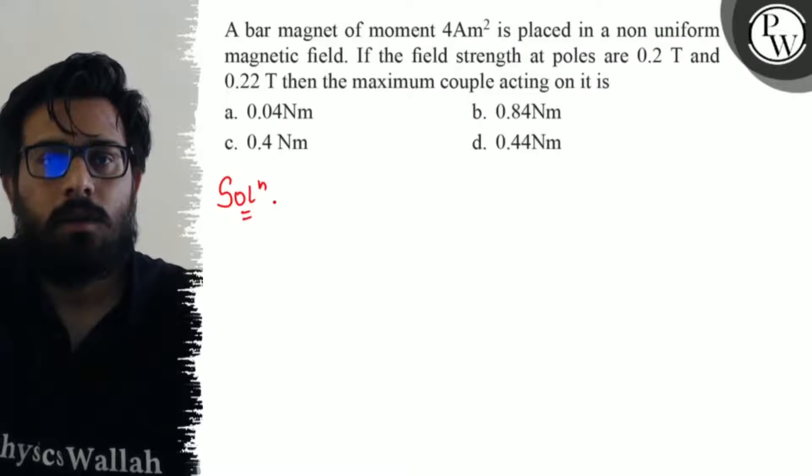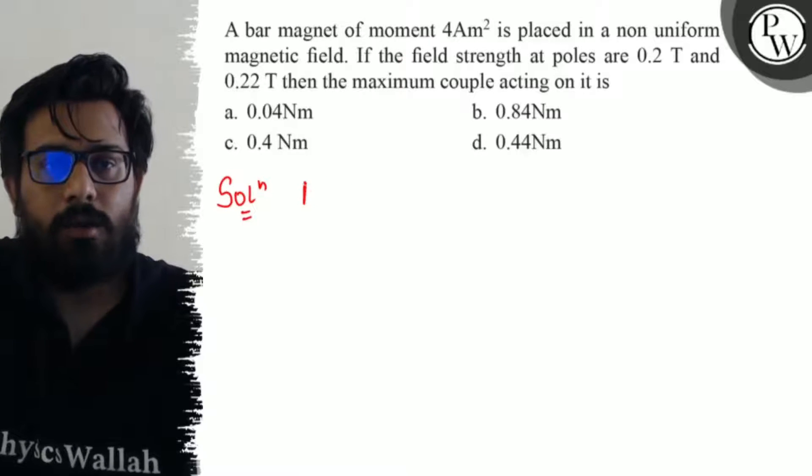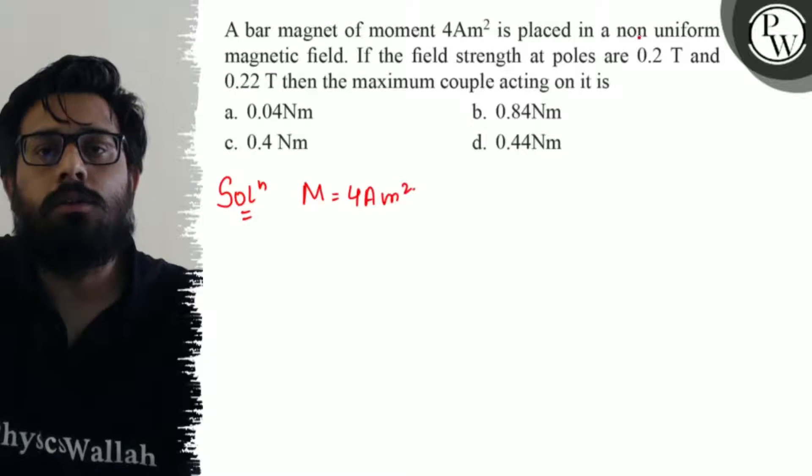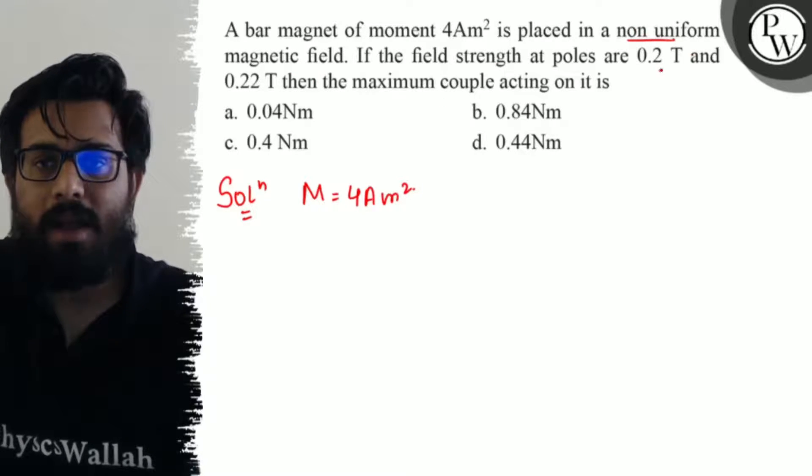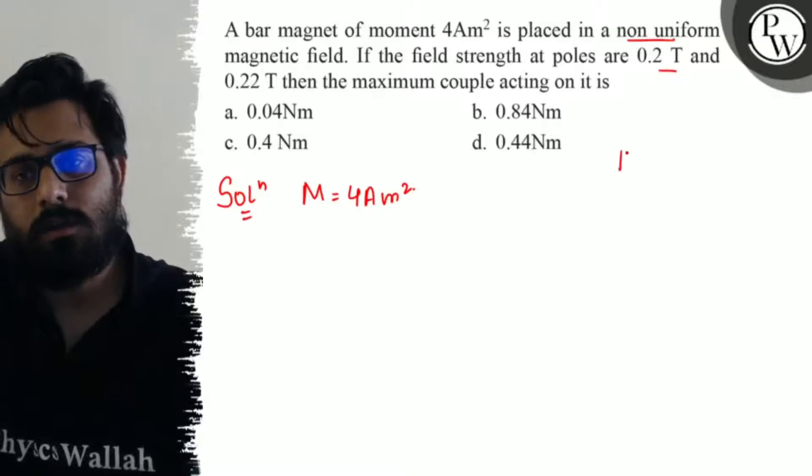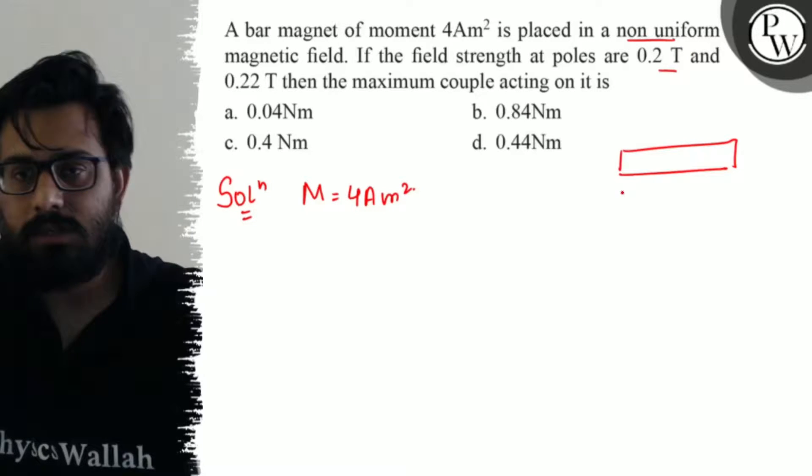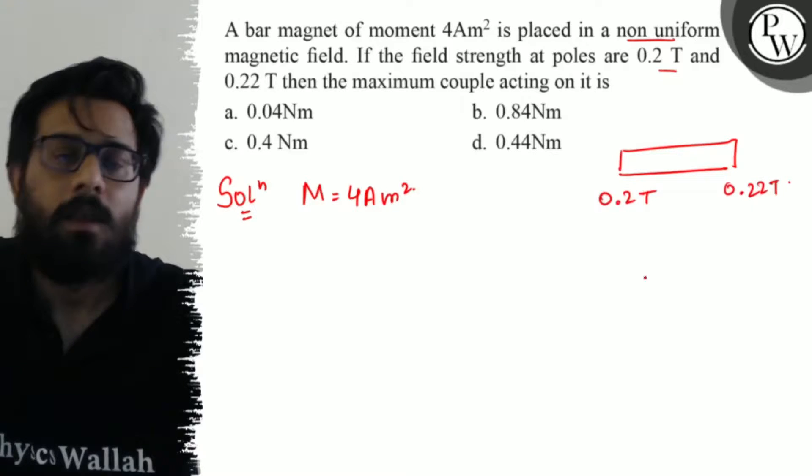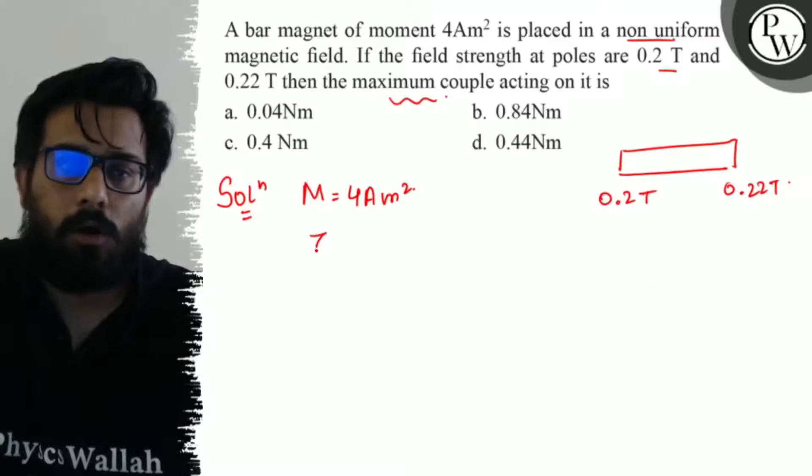So here in this question, you have a magnetic moment M = 4 ampere meter squared, but you have a non-uniform magnetic field. The value of magnetic field is different at different poles—at one pole 0.2 Tesla and at the other pole 0.22 Tesla. We have to calculate the value of maximum couple, or you can say maximum torque.